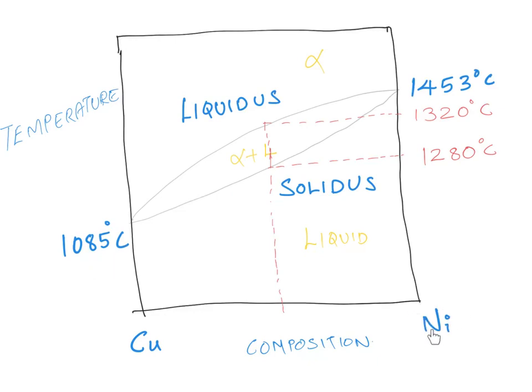And a similar process, a similar single temperature process will happen for nickel also. So for pure nickel at a temperature of 1453 degrees centigrade. So that is not the case if you have an alloy. If you have 50% of copper and 50% of nickel, the situation is different.